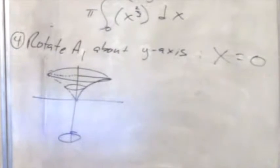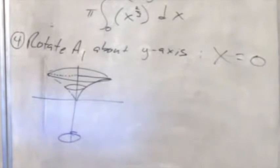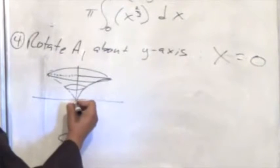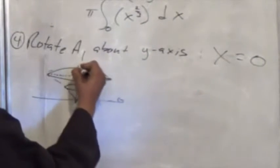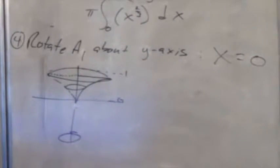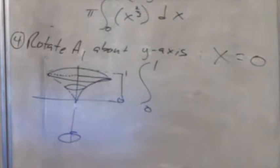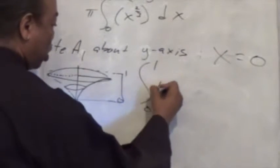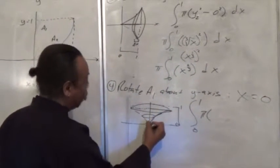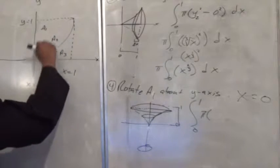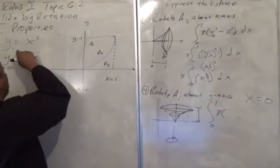Now let's start working on the major piece right here — finding the starting and stopping point. So we're going to go from 0 to 1. Our radius will be made out of pi times the radius of the outer. The outer is this portion right here, which is the red, y1 — y1 squared.